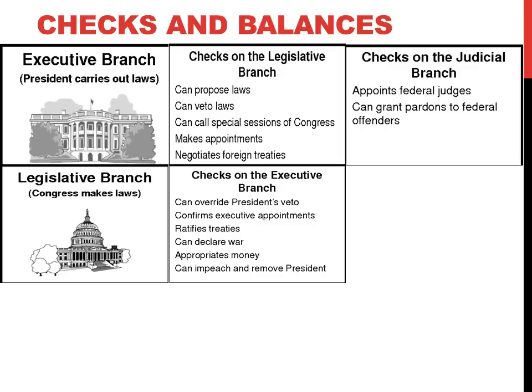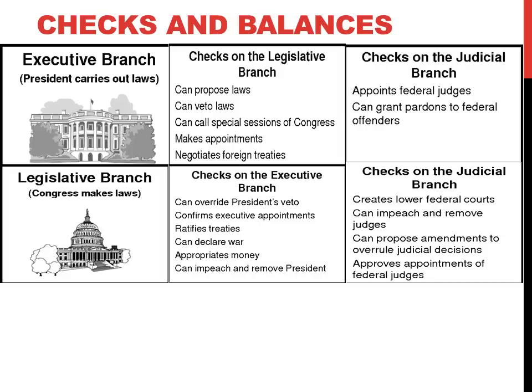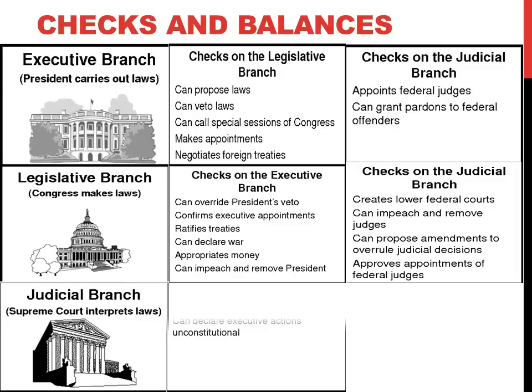Congress also has the ability to control the passing of the budget the President proposes each year. Congress can check the judicial branch by creating lower federal courts, changing their jurisdictions, impeaching or removing judges, and the Senate has the ability to confirm the President's court appointments. The Supreme Court can use its power of judicial review to declare acts of Congress or the President as unconstitutional.